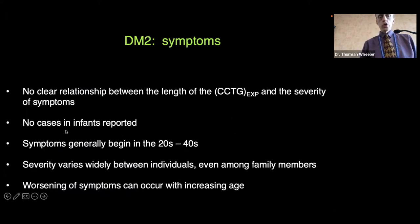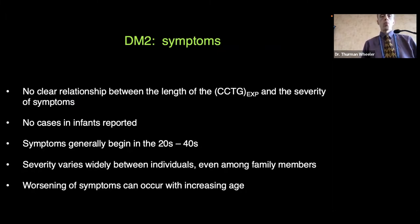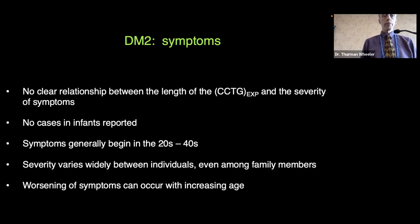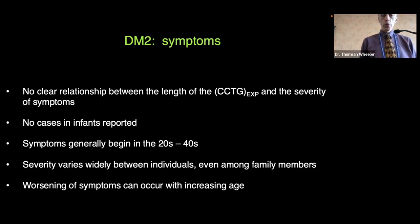The symptom severity in DM2 shows no clear relationship to the length of the CCTG repeat — in contrast to DM1, where there is generally a worsening of symptoms in relationship to the number of repeats. In DM2, there have been no cases reported in infants. Symptoms generally begin in the 20s to 40s, although it's highly variable, and some people have minimal to no symptoms. Severity can vary significantly even among family members, and symptoms tend to worsen with increasing age.